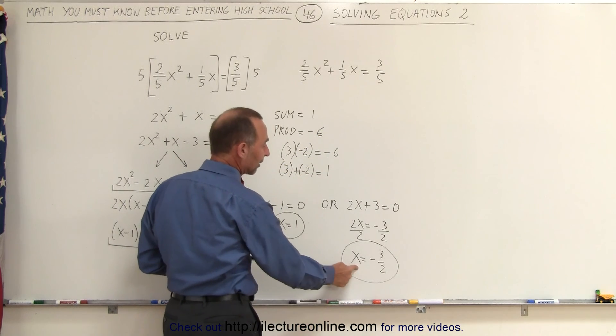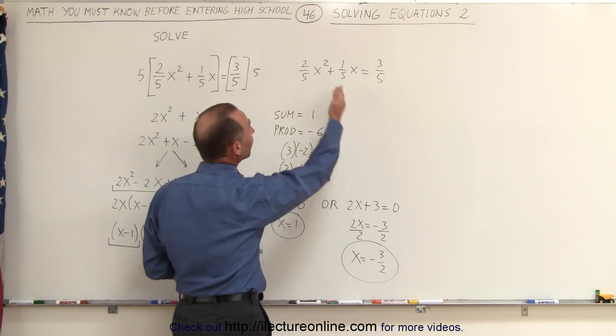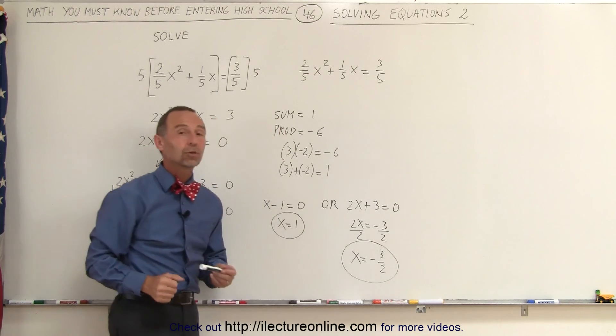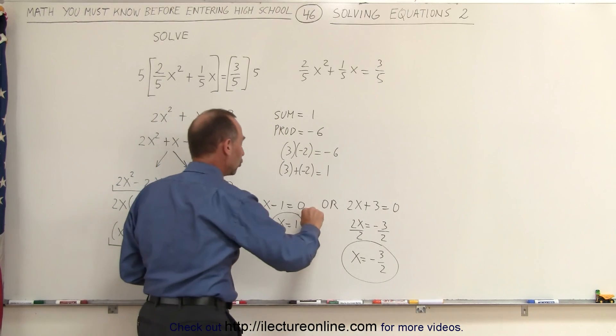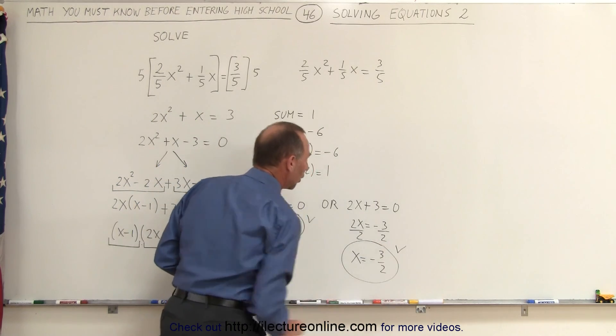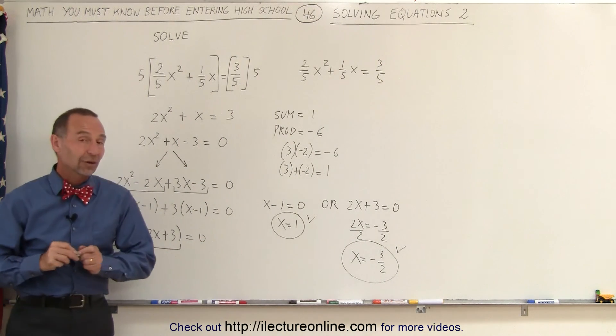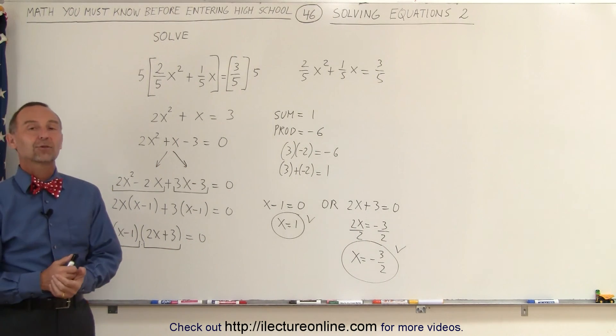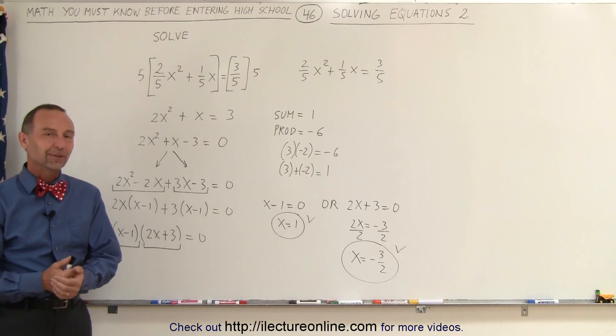And if we plug in x equals minus 3 halves, we should get the left side equal to the right side. So these are the two solutions to our original equation. Either x equals 1 or x equals negative 3 halves. And that's how it's done.